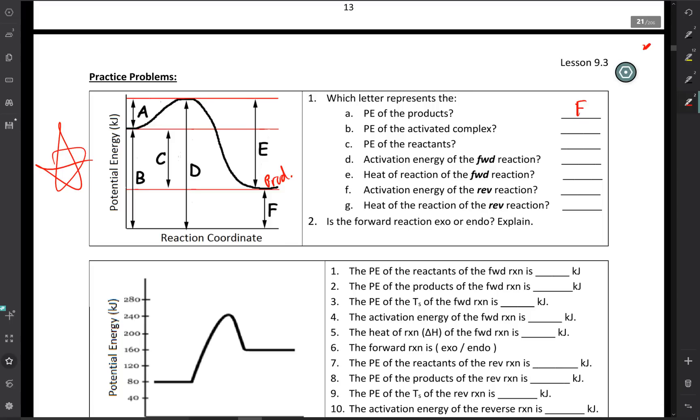The potential energy of the activated complex, also known as the transition state. Now the transition state is the point on the PE diagram that is highest in energy. So that's going to be represented by letter D.